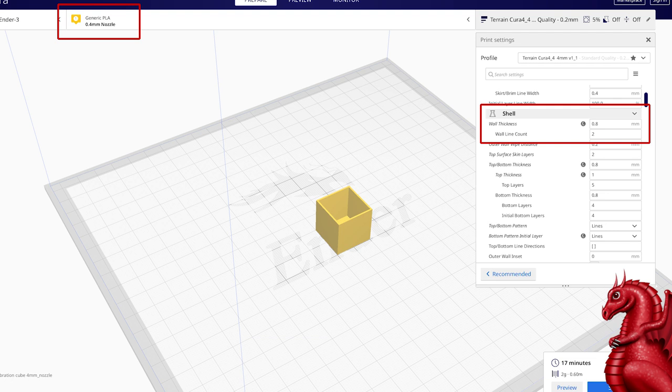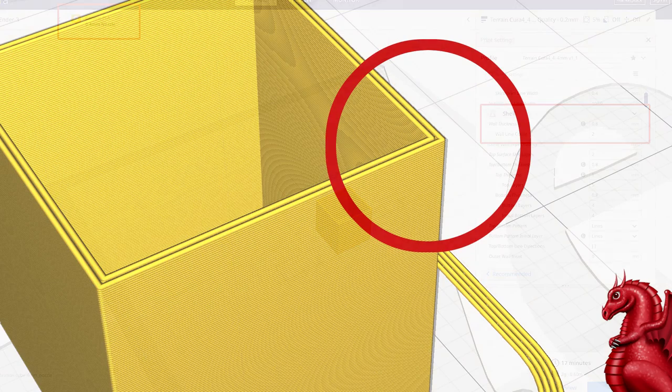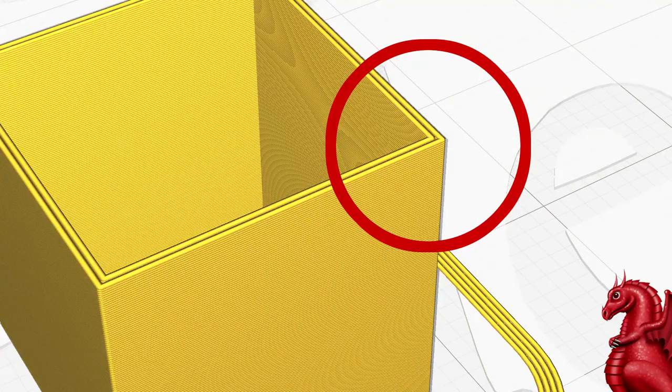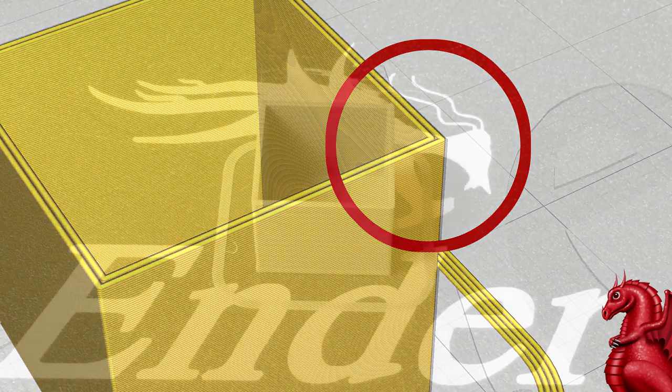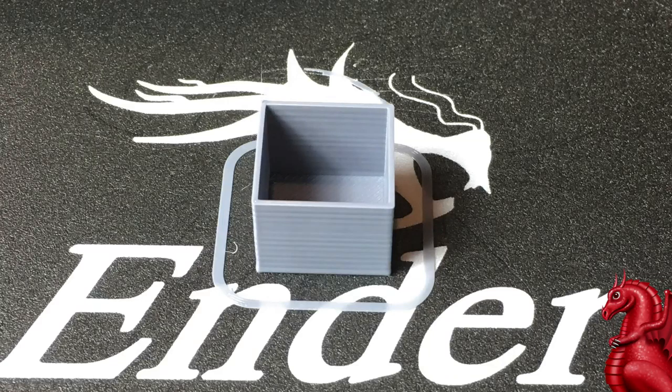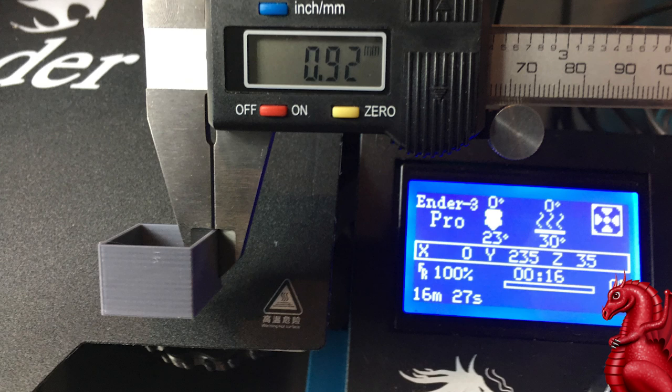Your shell numbers should look like this: 0.8. What that's going to do when it slices is going to give you two perfect walls. When we run this out, it's going to look like this and it should measure 0.8. In my case it's measuring 0.92. That's too thick. I'm over extruding still.